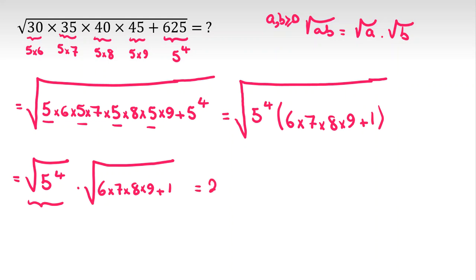This part is 5 squared, which will be 25 times square root of 6 times 7 times 8 times 9 plus 1.